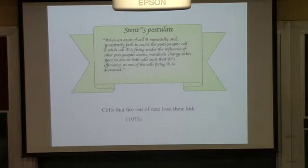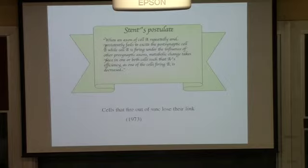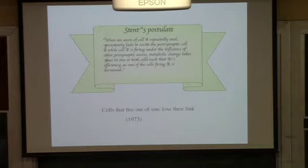It took almost 30 years for someone to ask about the opposite: what if cell A failed to activate cell B? In that case, it's kind of a useless synapse — its strength should be reduced, it should be depressed. That was a Stent/Hopfield-type rule, proposed around 1973. Those two mechanisms were conceived probably 30 years before there was any experimental evidence.